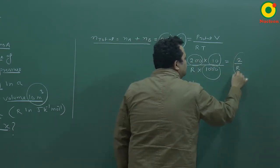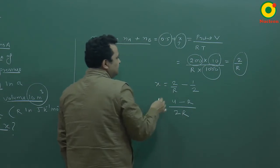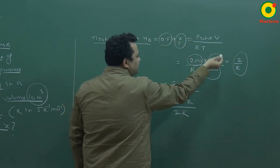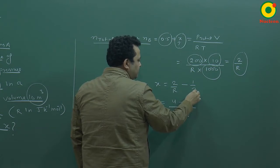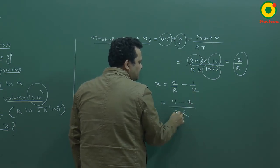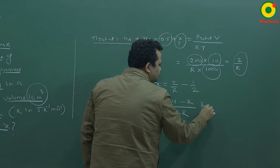It is coming out as 2 by R. I will take this 0.5, so 2 by R minus 1 by 2 equals 4 minus R upon 2R. That is the answer.